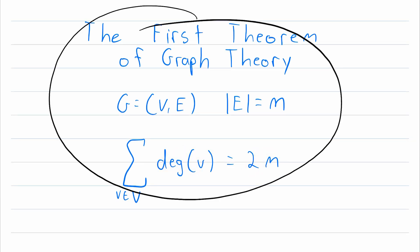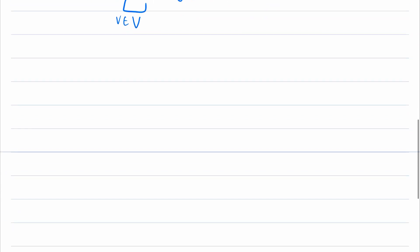So, with the first theorem of graph theory at our side, let's go ahead and get into the proof. And remember, we're proving that every graph has an even number of odd degree vertices. We'll begin, as we often do, by letting G be a graph with vertex set V and edge set E. And let's say that the size of G, the number of edges it has, is equal to M. So, the cardinality of the edge set is M.